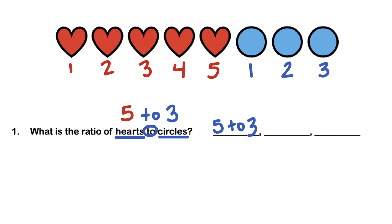The second way is using fraction notation, where the first term goes on top and the second term goes on the bottom. So I'll write that as 5 over 3.